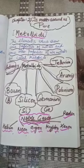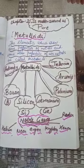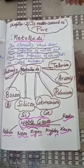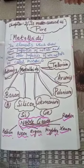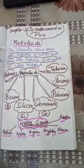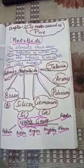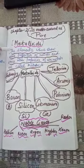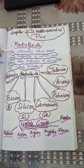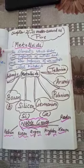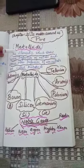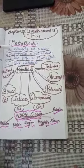Good morning class. Already we have discussed that all the elements can be classified into metals, non-metals, metalloids and noble gases. After studying about metals and non-metals, I am going to explain you about metalloids and noble gases.